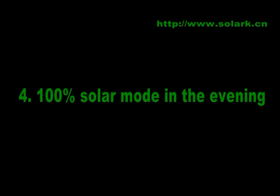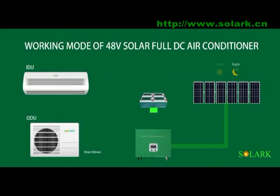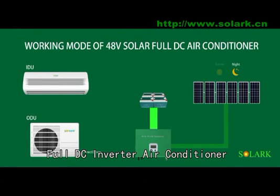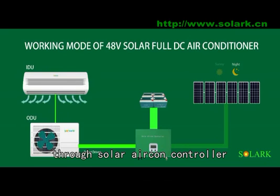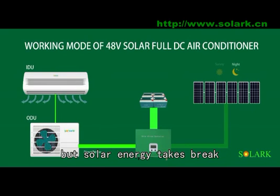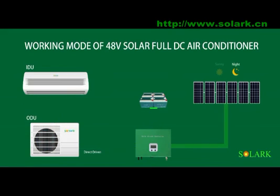100% solar mode evening: in the evening, the full DC inverter air conditioner is still powered by the 48-volt battery bank through the solar air con controller, while solar energy takes a break.